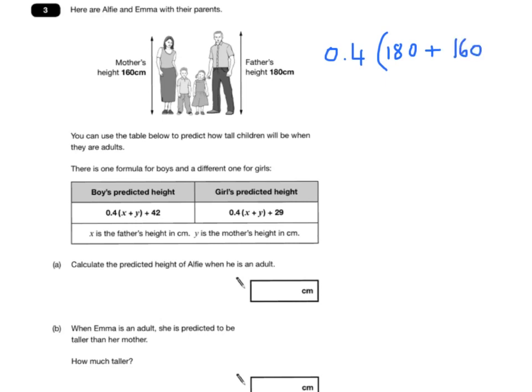Alfie, he's a boy, so the boy's predicted height is 0.4 times x plus y plus 42. So x, that's his father's height, is 180. His mother's height is 160, so we're doing 0.4 times, where the 0.4 is just out of the bracket, it means times,